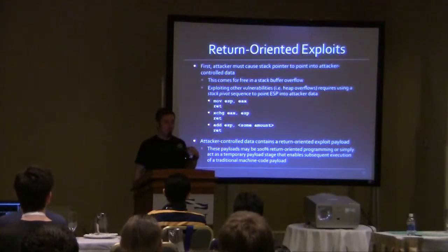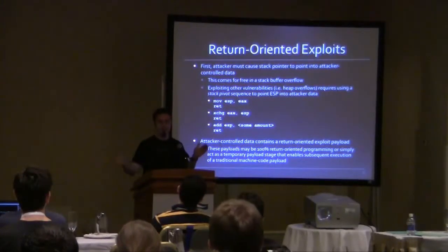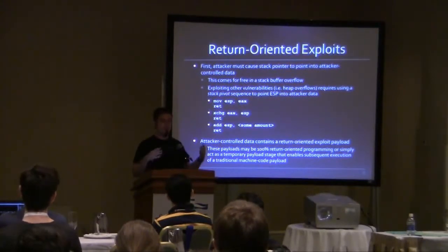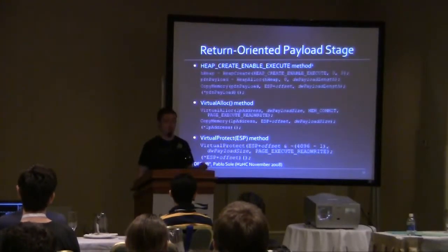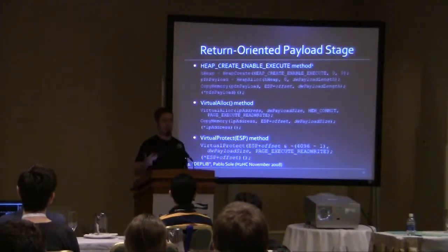Attack control data can contain a return-oriented program, which can either be a fully return-oriented payload that uses ROP to do everything, or it's easier to just make a return-oriented payload stage that uses ROP to basically evade DEP and then execute a traditional payload. And there are a variety of ways to do this, because DEP does not mean that the application can't allocate more executable memory. So you can just allocate executable memory, copy your payload into it, and execute it from there.